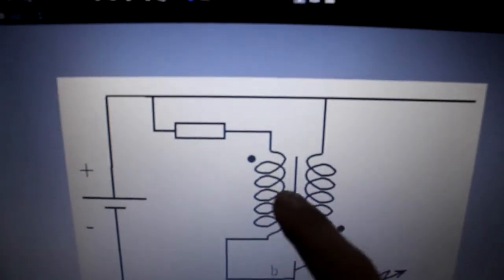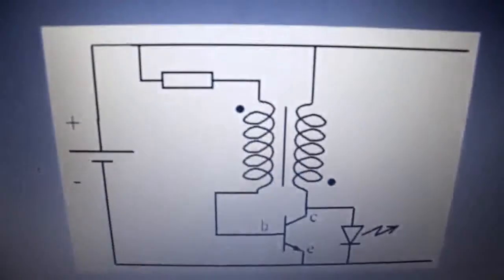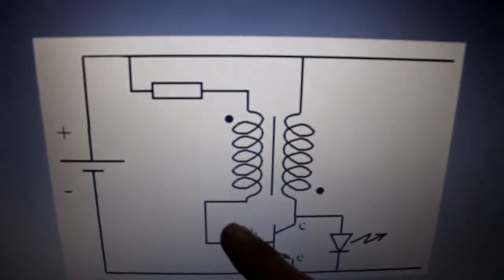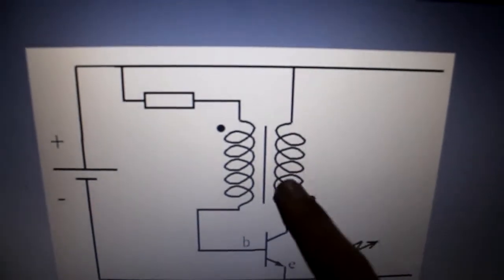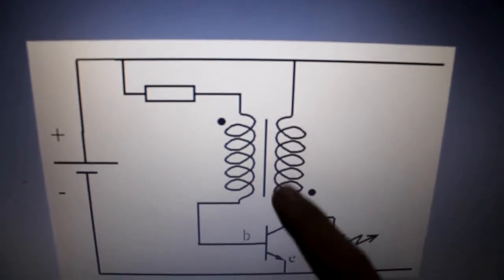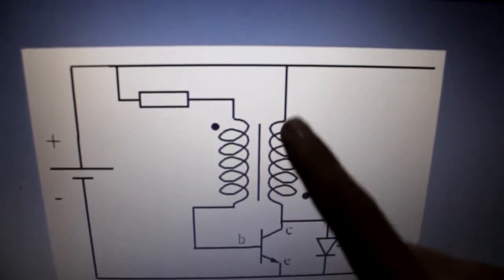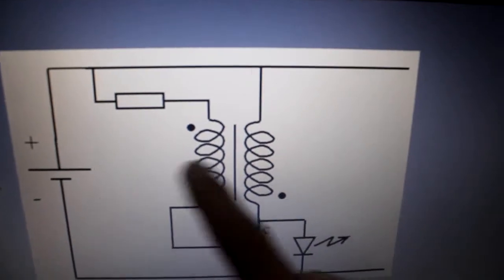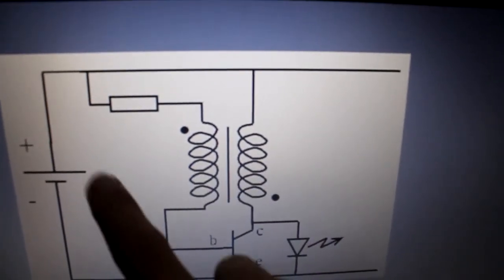And becomes the base and pushes this coil a higher voltage from the source so almost two of the source.